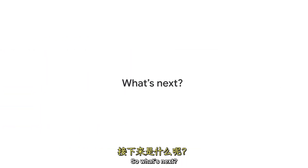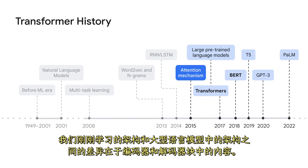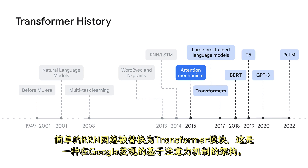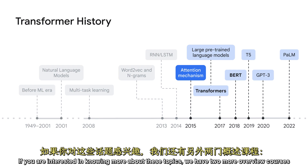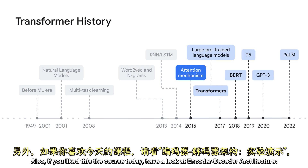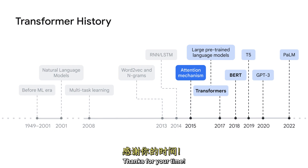So what's next? The difference between the architecture we just learned about and the ones in the large language models is what goes inside the encoder and decoder blocks. The simple RNN network is replaced by transformer blocks, which is an architecture discovered here at Google and which is based on the attention mechanism. If you're interested in knowing more about these topics, we have two more overview courses in that series: Attention Mechanism Overview and Transformer Models and BERT Overview. Also, if you like this course, have a look at the encoder-decoder architecture lab walkthrough, where I'll show you how to generate poetry in code using the concepts we have seen in this overview. Thanks for your time. Have a great day!